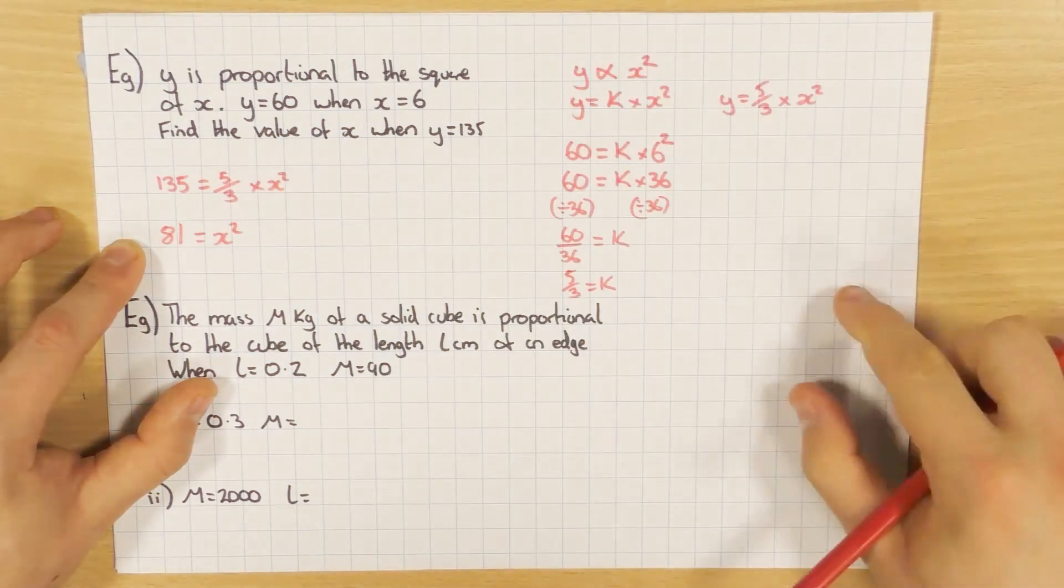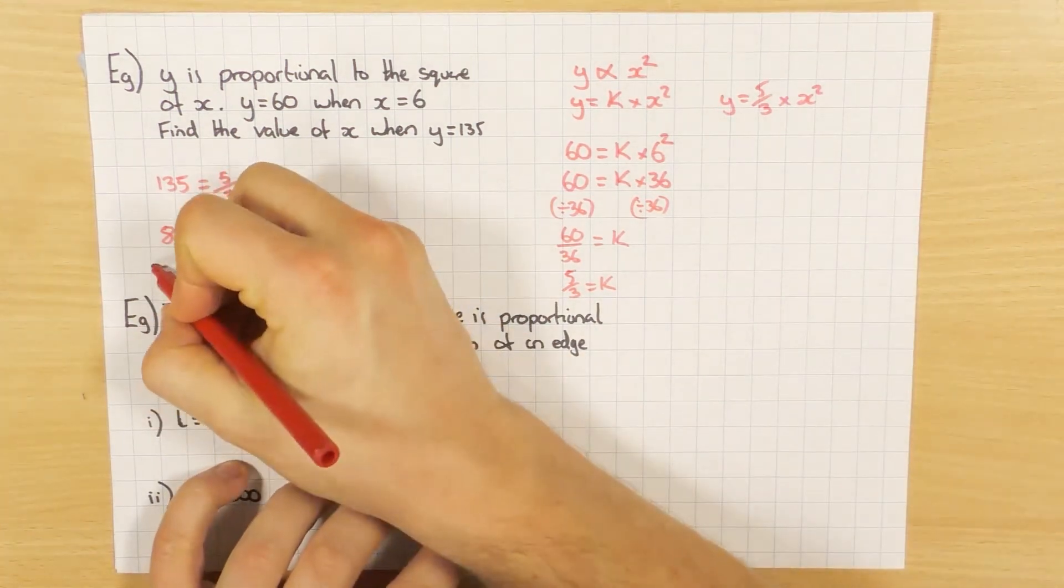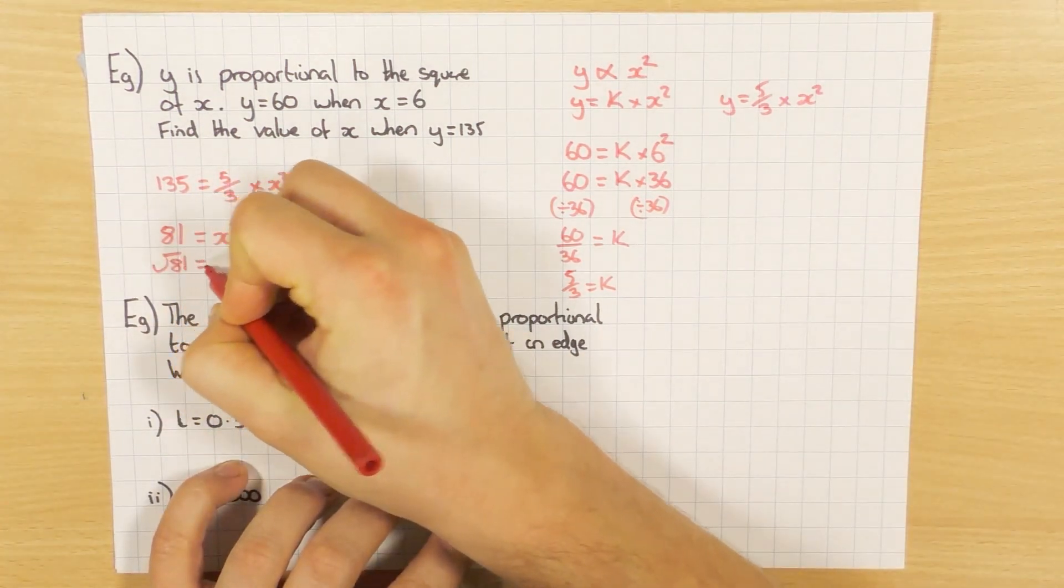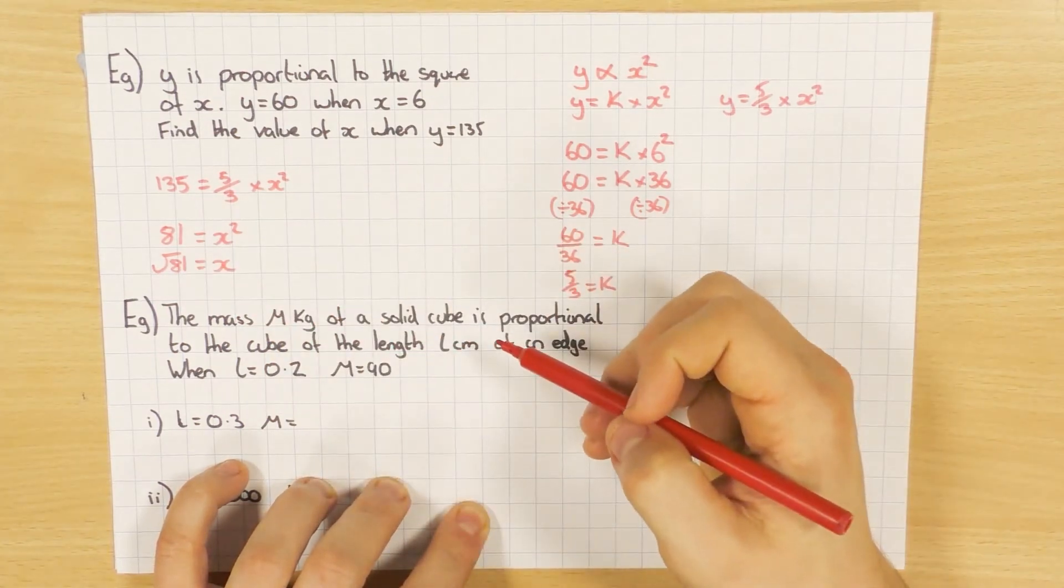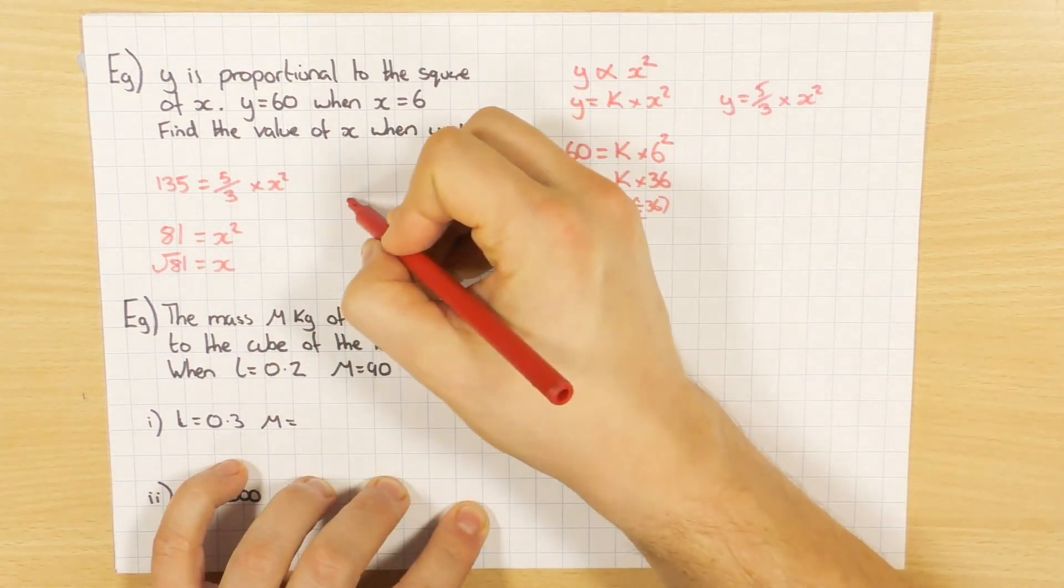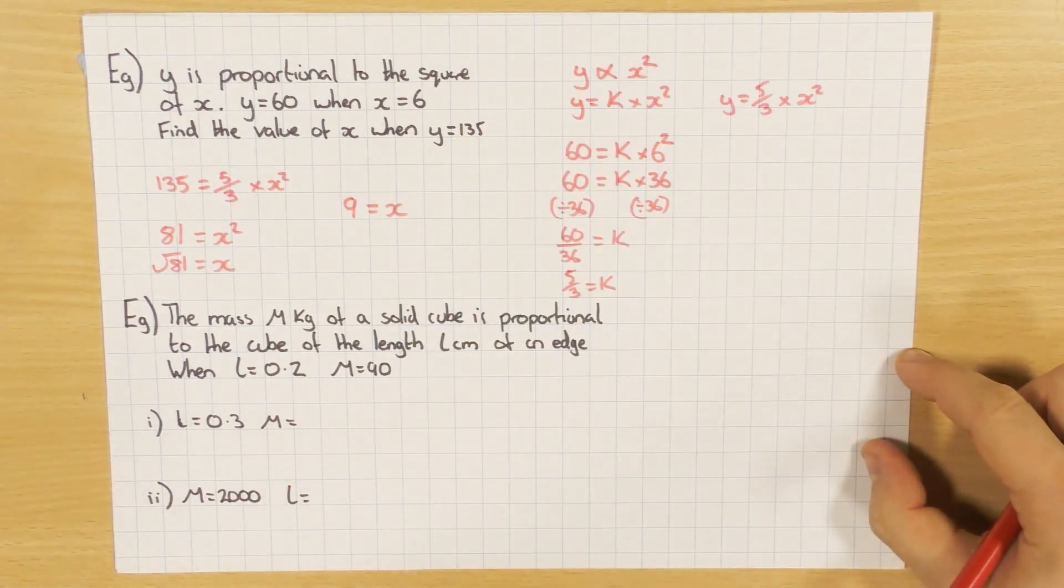Again, I'm going to continue to solve this. So at the minute it's x squared. What's the opposite of squaring? Square rooting. So I'm going to square root 81, which will give me x. Sorry, square root both sides. So obviously that's what I get. And hopefully you've already spotted it, that the square root of 81 is 9. So x equals 9 in this particular case.